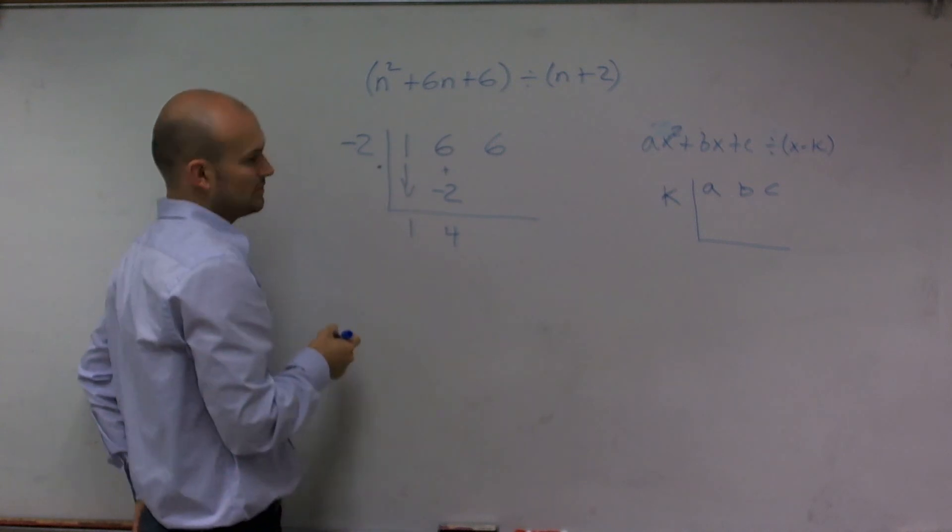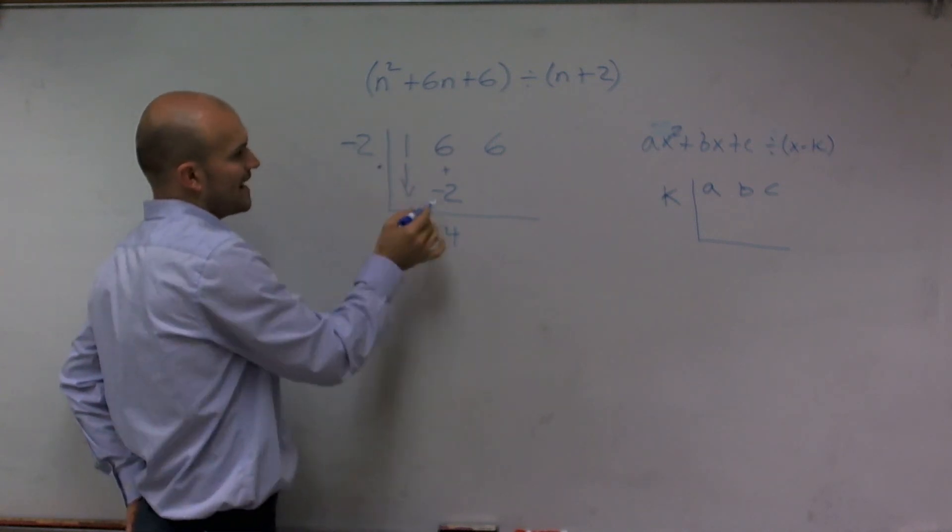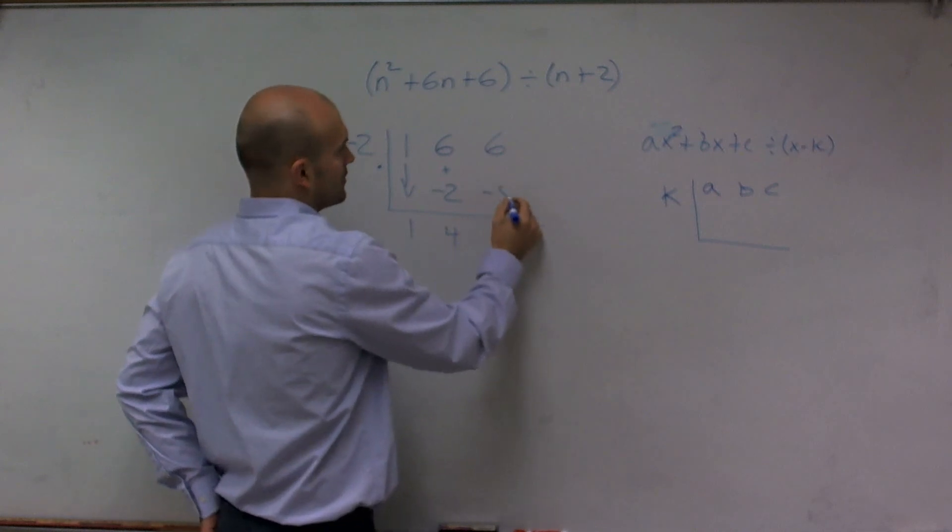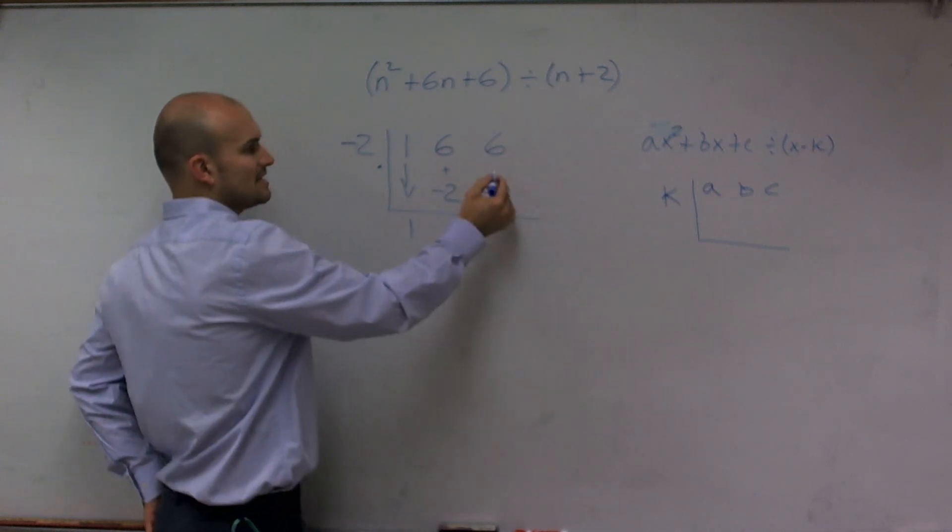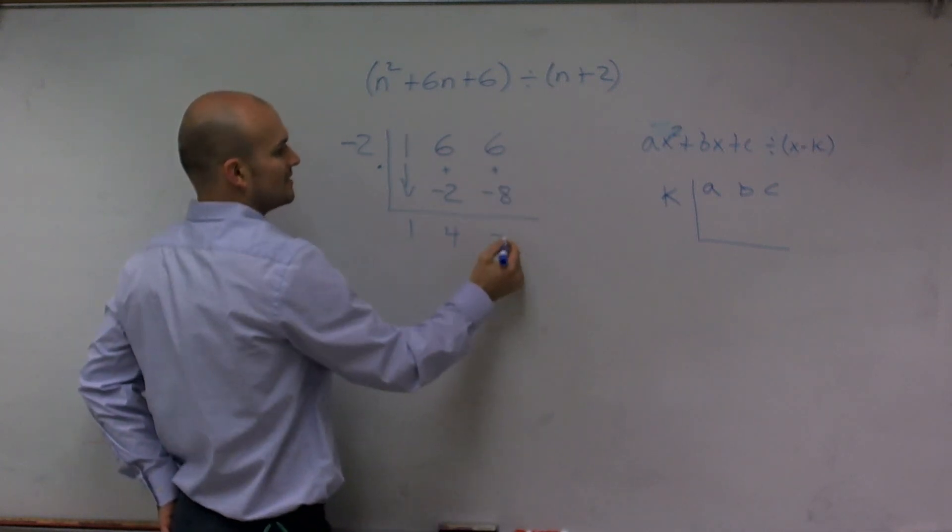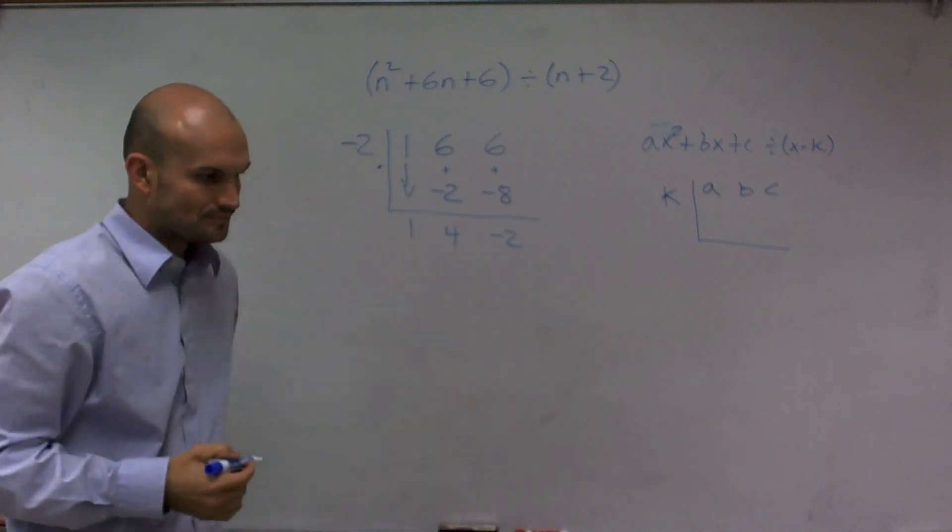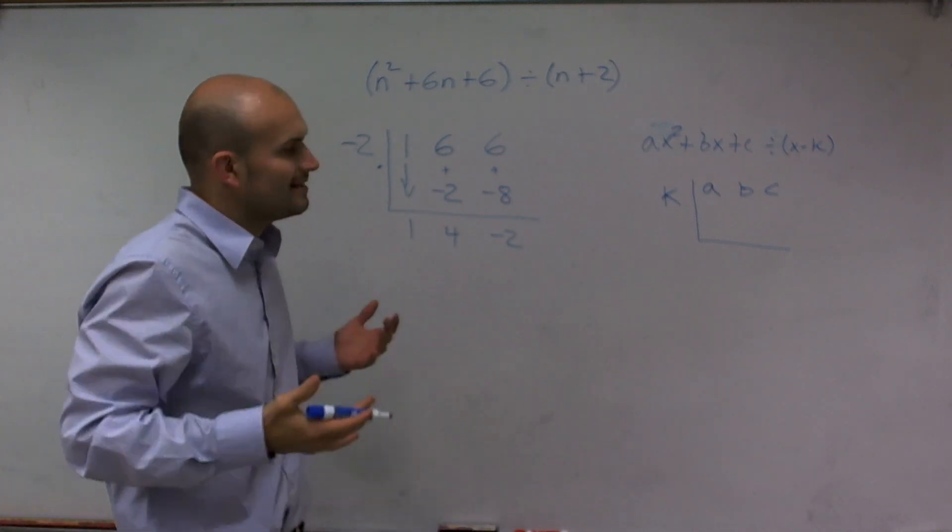I'll put a little multiplication symbol to remember to multiply. Negative 2 times 4 gives you negative 8. 6 plus negative 8 gives you negative 2. Then that's it.